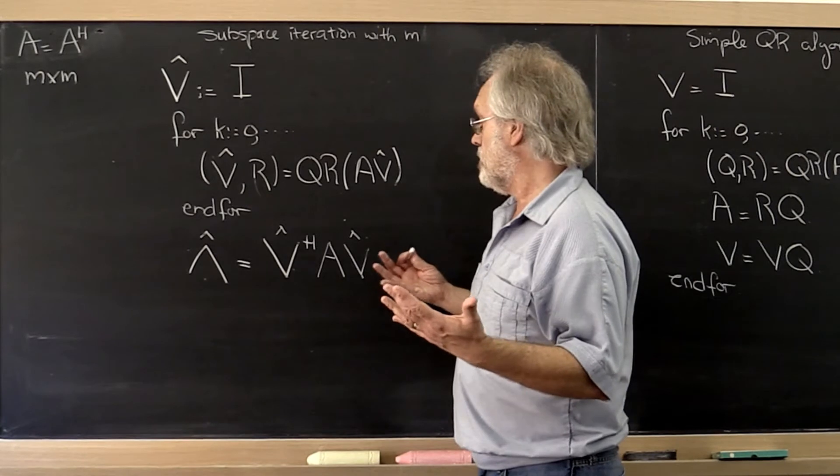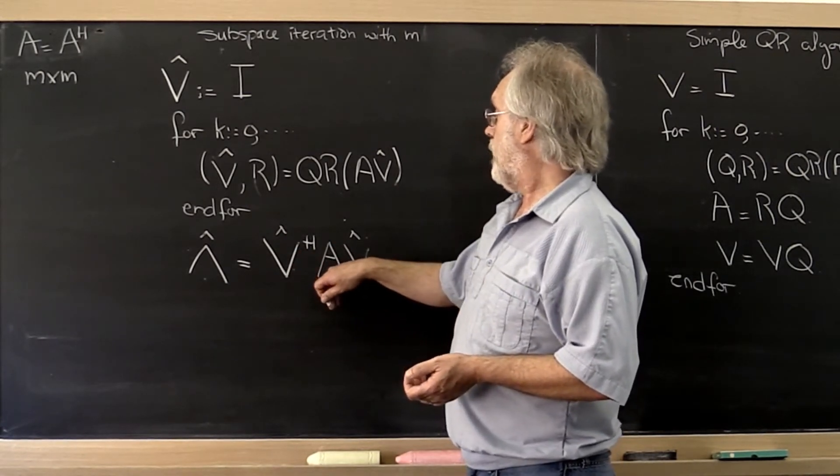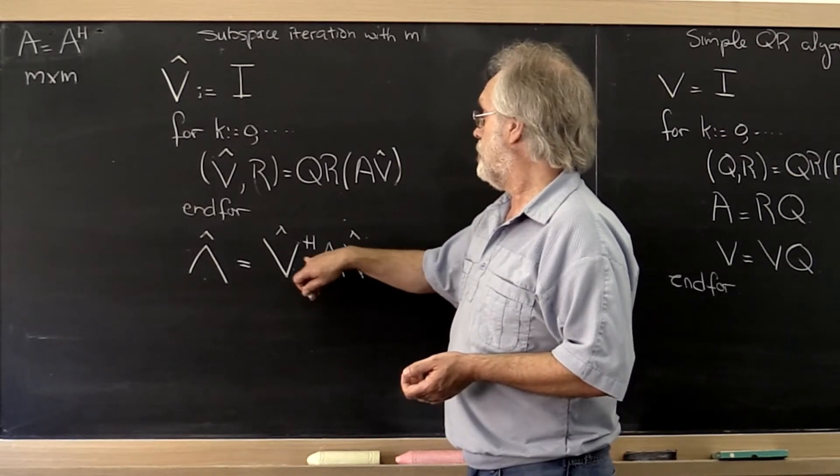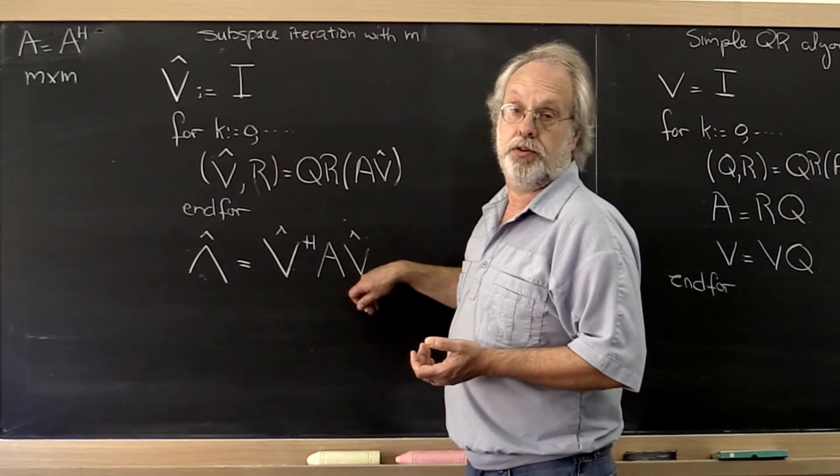And then we would have our spectral decomposition. Our spectral decomposition would be A equals V hat times lambda hat times V hat Hermitian transpose.